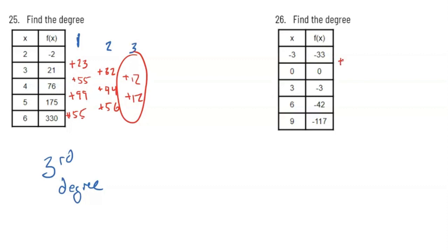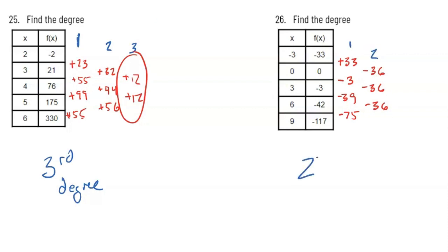Now let's try this next one. From negative 33 to 0, we went up 33. From 0 to negative 3, we went down 3. From negative 3 to negative 42, we went down 39. And from negative 42 to negative 117, we went down 75. That's my first set of differences. Now for the second set: from 33 to negative 3, that's a change of down 36; from negative 3 to negative 39, that's down 36; and from negative 39 to negative 75, that's also down 36. How many times did we analyze the differences to get a constant value? One, two. That makes this a second degree polynomial.